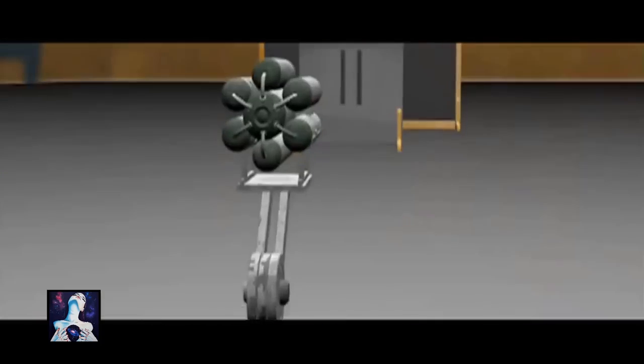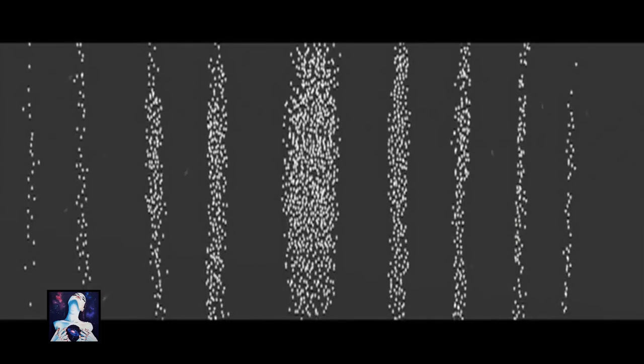We fired electrons, tiny bits of matter through. We get a pattern like waves, not like little marbles. How? How could pieces of matter create an interference pattern like a wave? It doesn't make sense.